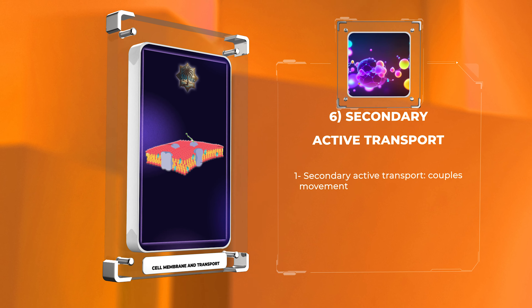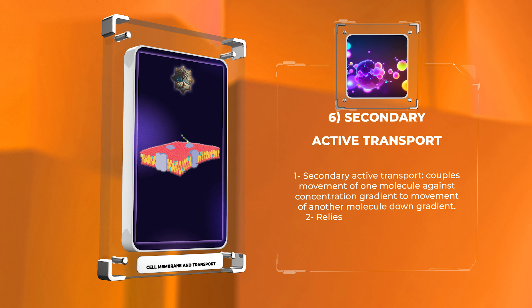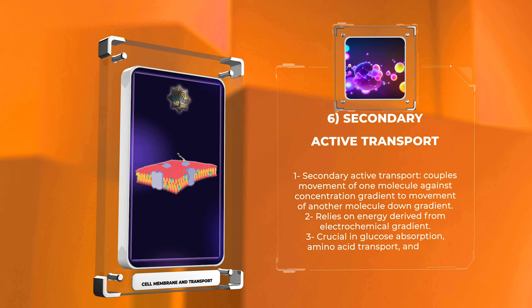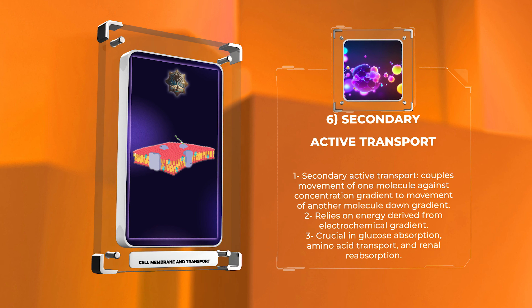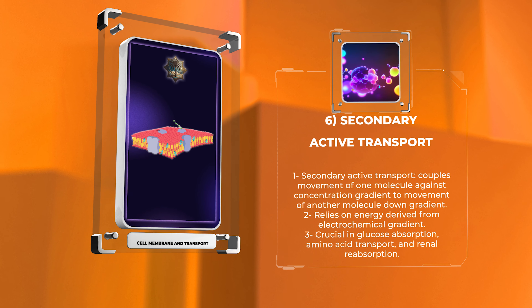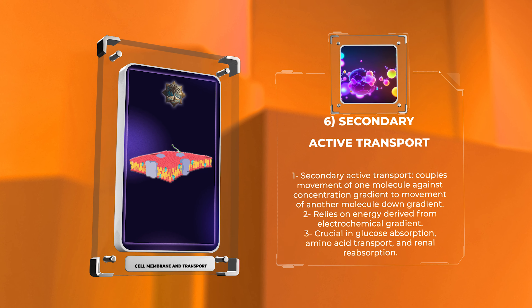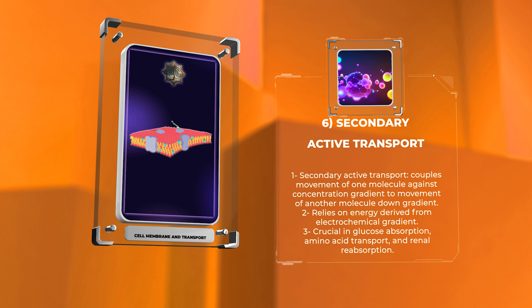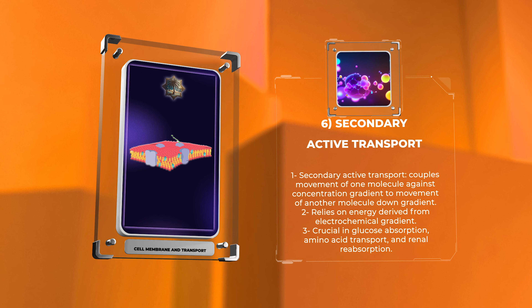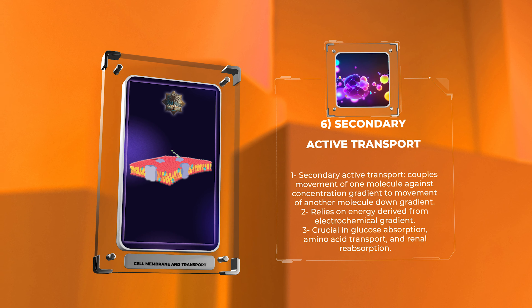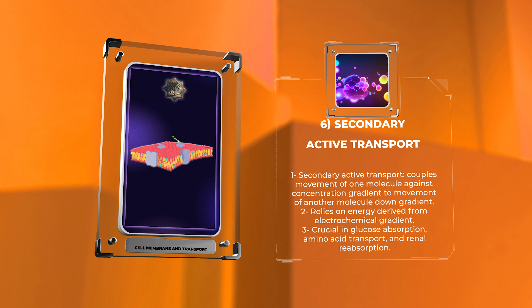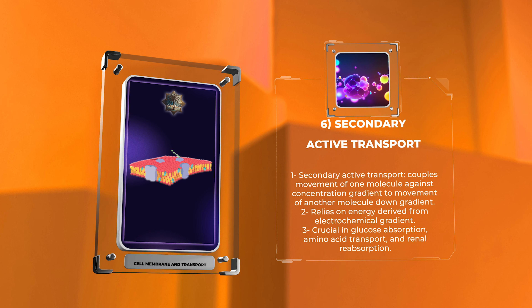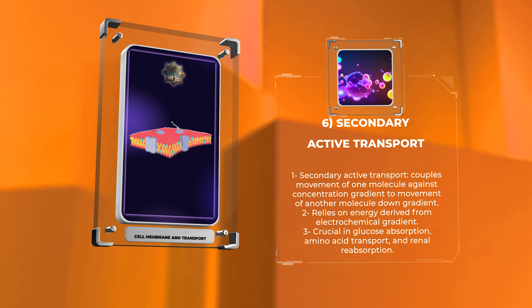Secondary active transport is a vital cellular process that couples the movement of one molecule against its concentration gradient to the movement of another molecule down its concentration gradient. This process relies on the energy derived from the electrochemical gradient of one molecule to transport another molecule against its concentration gradient.